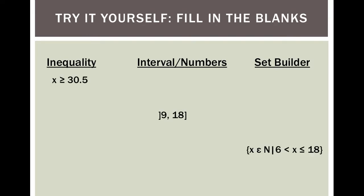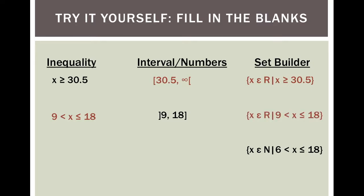Try it yourself. Here are some inequalities, some intervals, and some set builder. Take a second and try to fill in these blanks. For the first one, it's going to hug 30.5 going all the way to infinity — all real numbers — so X is in real numbers such that X is greater than or equal to 30.5. For the second one, the interval is between 9 and 18. It hugs the 18 but not the 9, so I have a less than and a less than or equal to symbol. In set builder: 9 is less than X, which is less than or equal to 18.